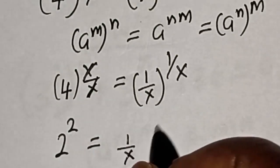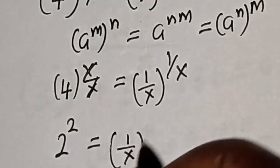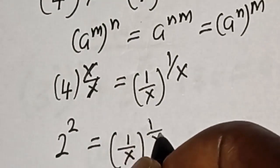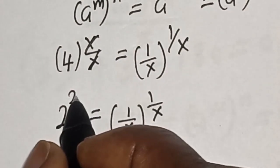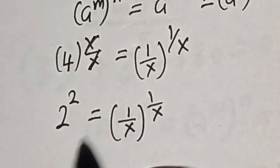Then by comparing the exponents, 2 is equal to 1 over x raised to 1 over x. Therefore, 1 over x is equal to 2.